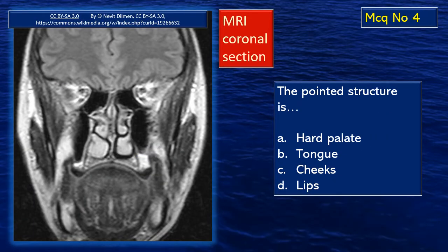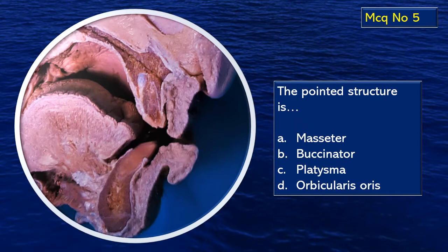MCQ number four: here is an MRI coronal section. You can see the nasal cavity, nasal septum, and the oral cavity details. There is a particular structure being pointed out by that yellow flashing arrow. What is that? Identify — there are four choices. The last MCQ is a specimen from the dissection hall. It is a sagittal section, roughly a mid-sagittal section passing through the oral cavity. A particular area has been pointed out by the flashing arrow. What muscle is that?